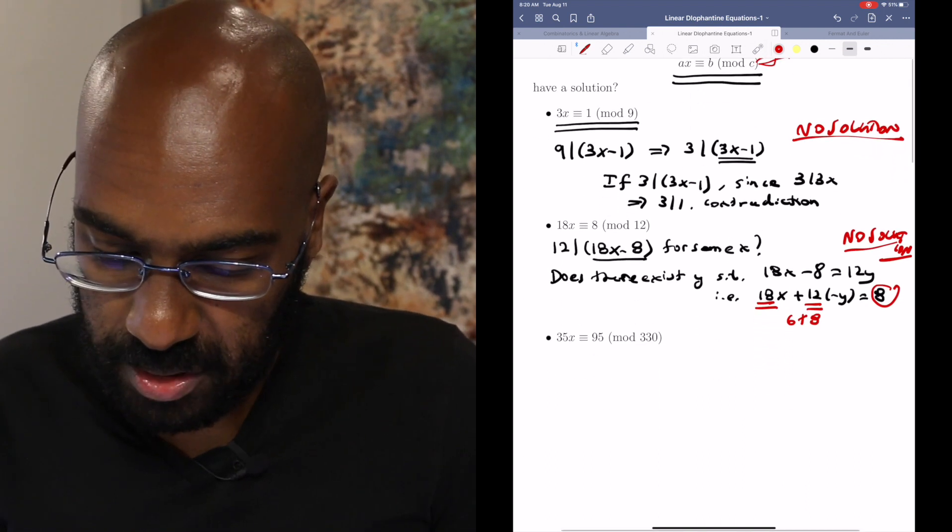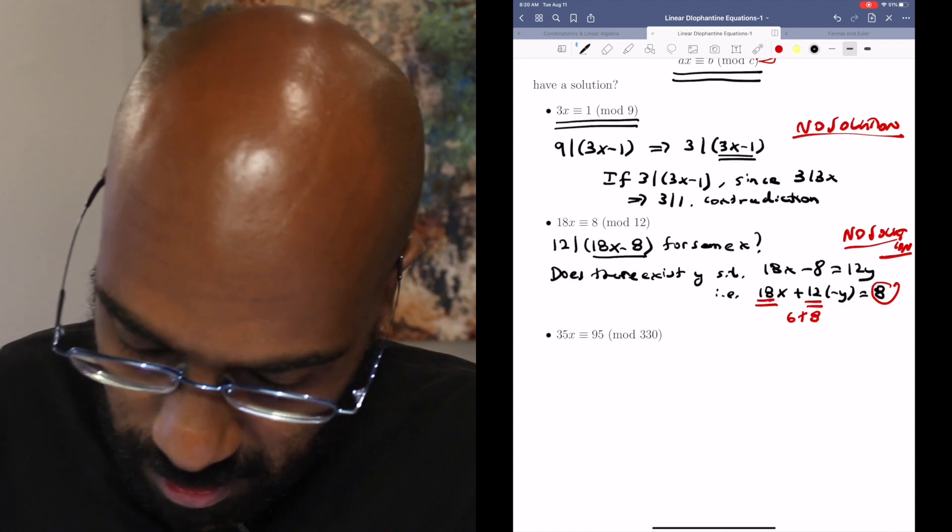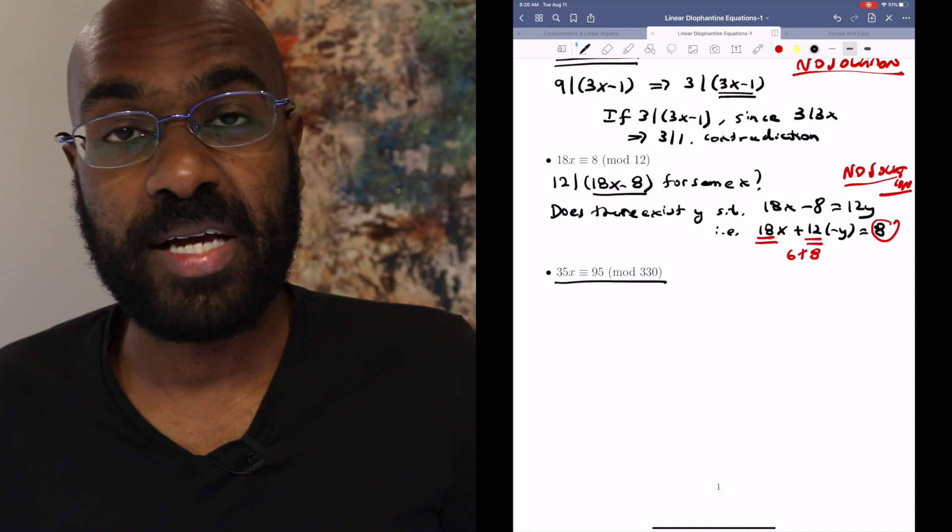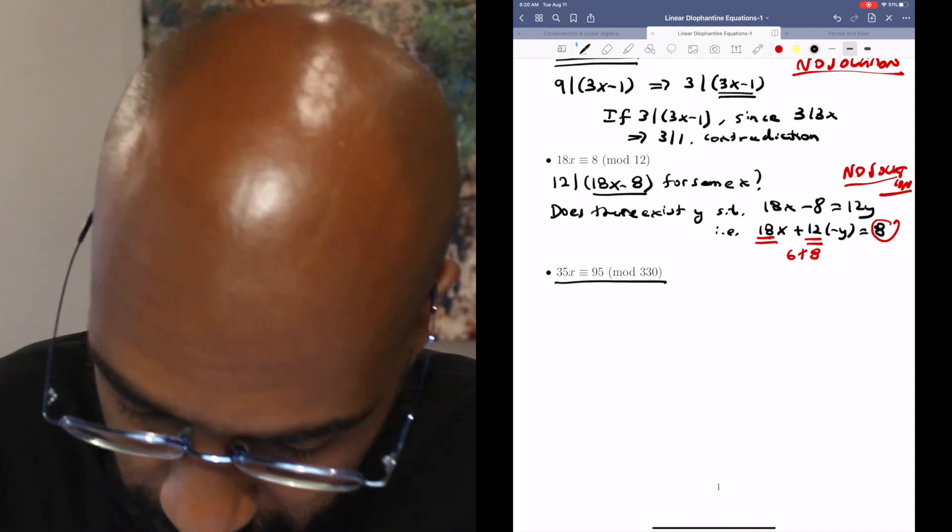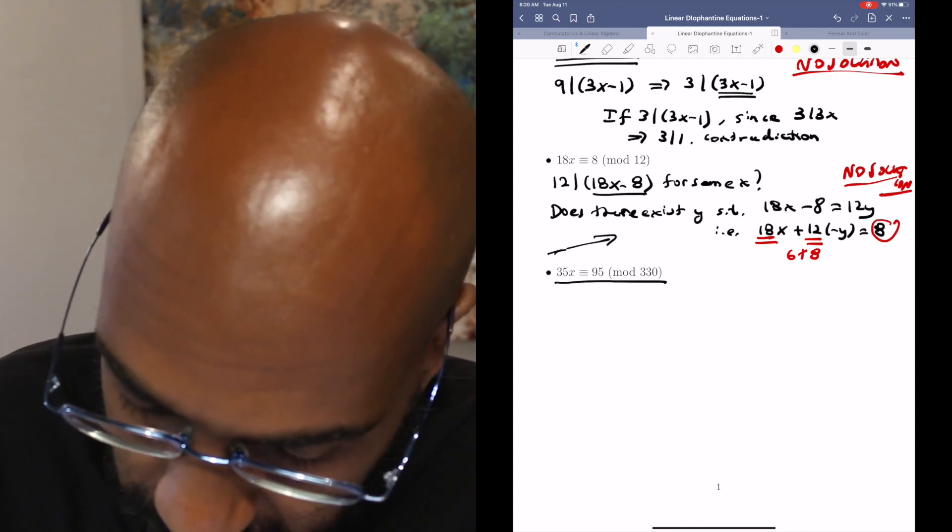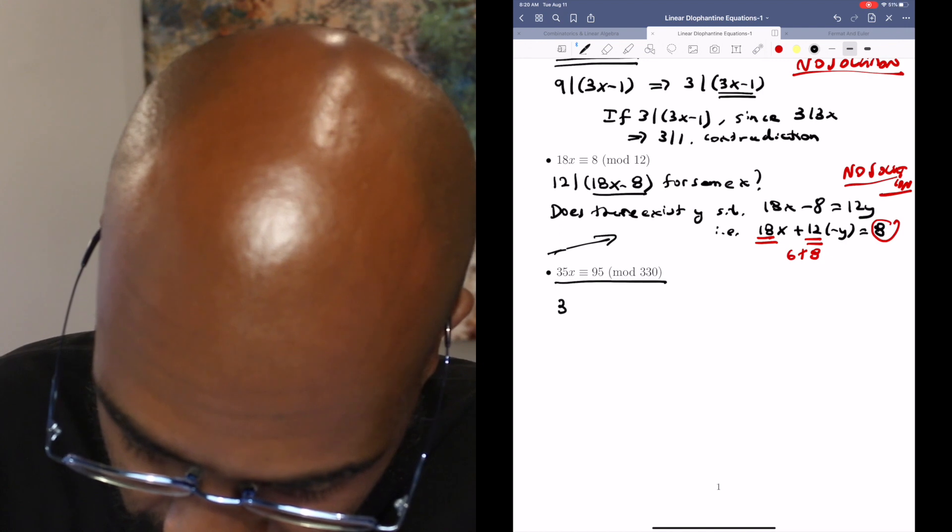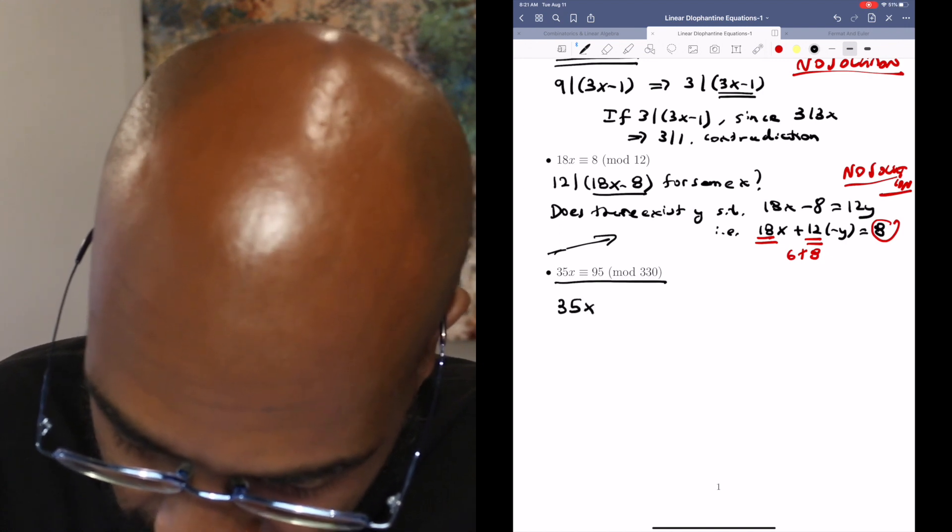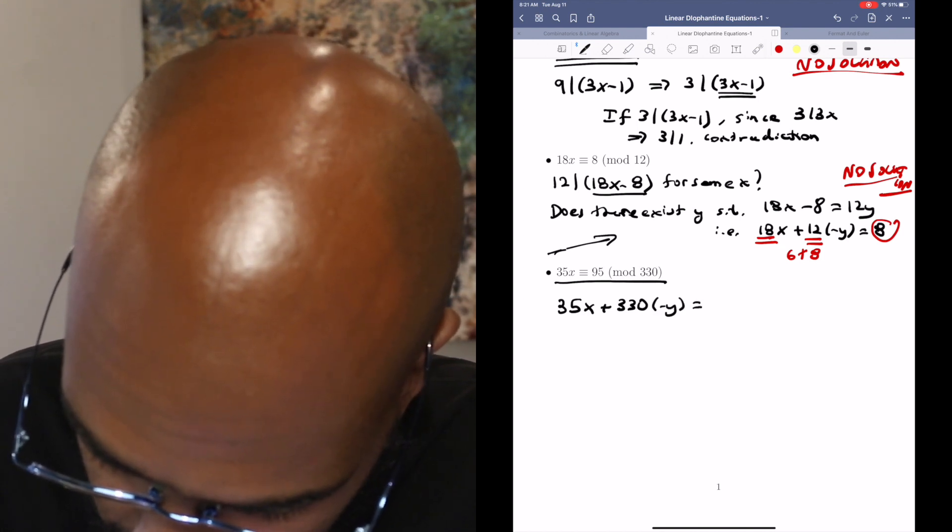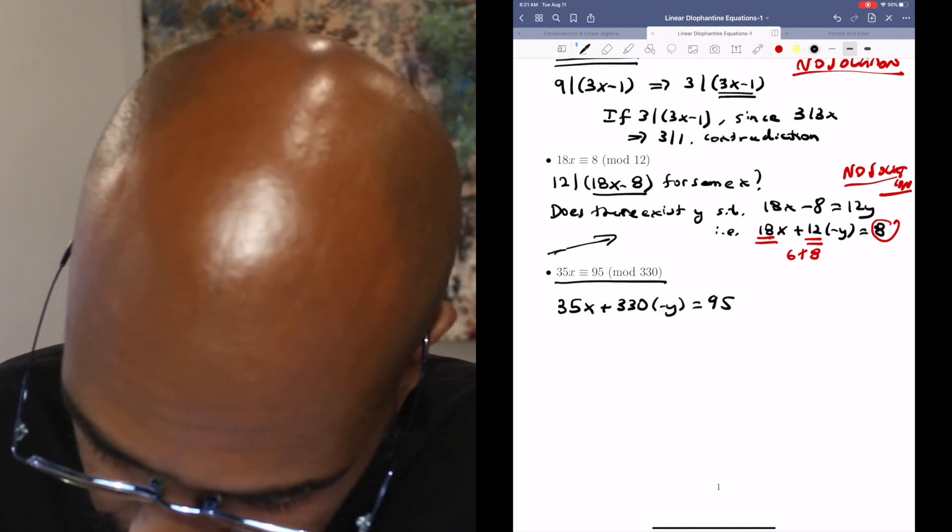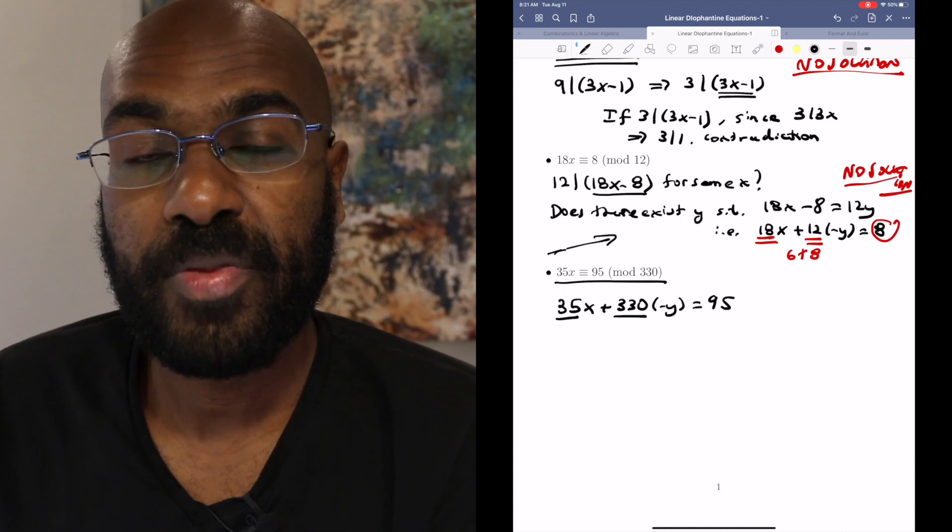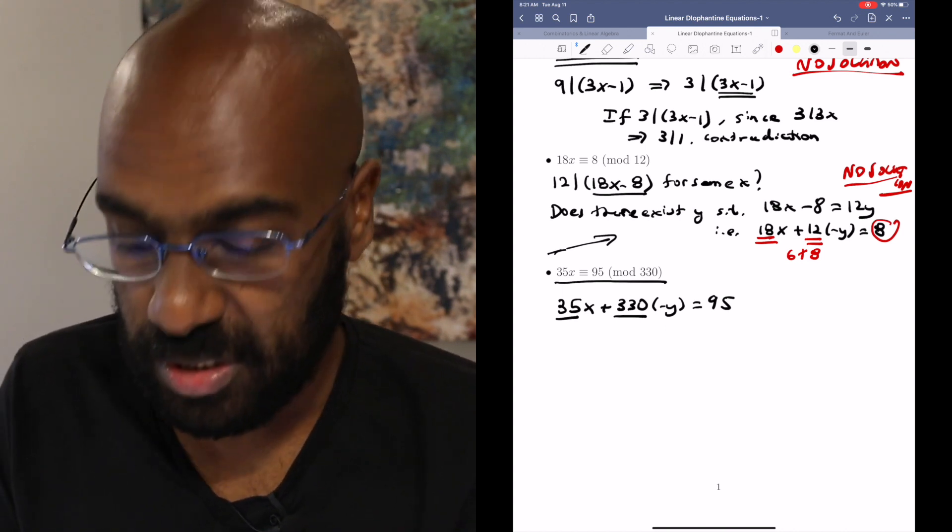So in that light, let's actually try to solve one of these, if possible, and we'll do this more complicated example. Is there a value of x for which 35x is congruent to 95 mod 330? So using the same idea as we did here, we can approach this by asking whether or not we can find a value of y for 35x plus 330 times negative y is 95. So we can use the Euclidean algorithm to figure out what the GCD of these two is. What I'm going to do instead is actually divide this by 5.